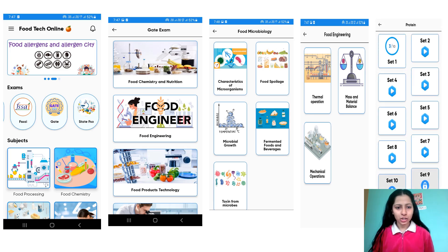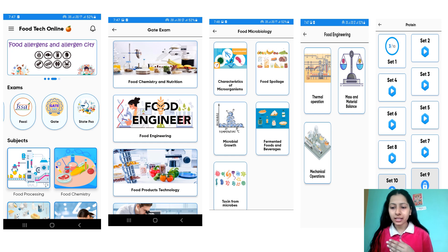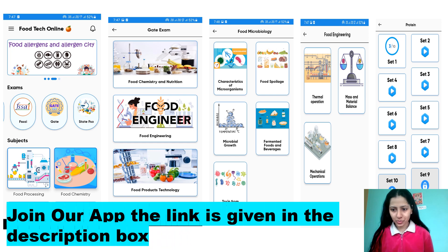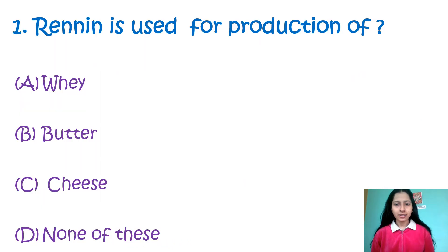Before starting, let me tell you about our app. If you have any food-related exam like FSSAI, GATE, XL, XE, Food Safety Officer, Central Food Safety Officer, FCA, or other food-related exams, our app provides various subjects and topics, including a questionnaire series to enhance your preparation. The link is given in the description box. First, try to pause the video and at the end do comment down your score out of 25. So now let us begin.